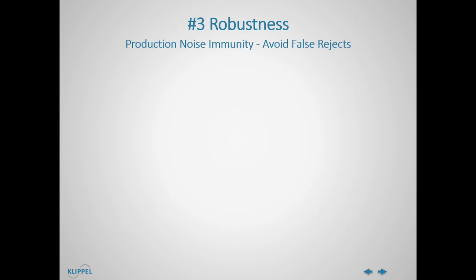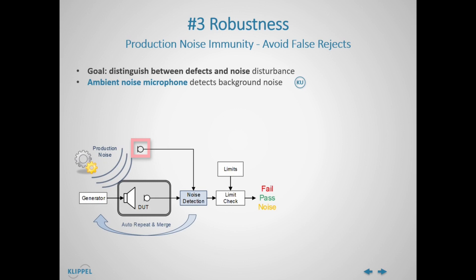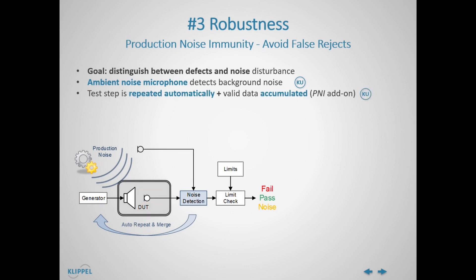One of the major concerns in end-of-line testing is whether a failed test was actually caused by failure of the device under test or external disturbances. Answering these questions with confidence is absolutely crucial to avoid false rejects. A smart method to be able to distinguish between defect and noise is based on an additional microphone outside of the test box, monitoring the background noise. The output signal of this microphone is correlated with the main test microphone in order to detect ambient noise errors. Using the specific characteristics of the chirp test signal, this can be even pushed further by applying a smart repeat and merging algorithm that yields a fully valid test result, even with frequent external disturbance.